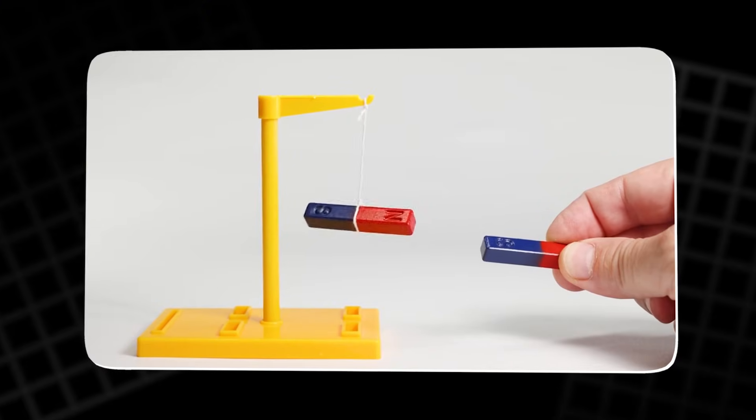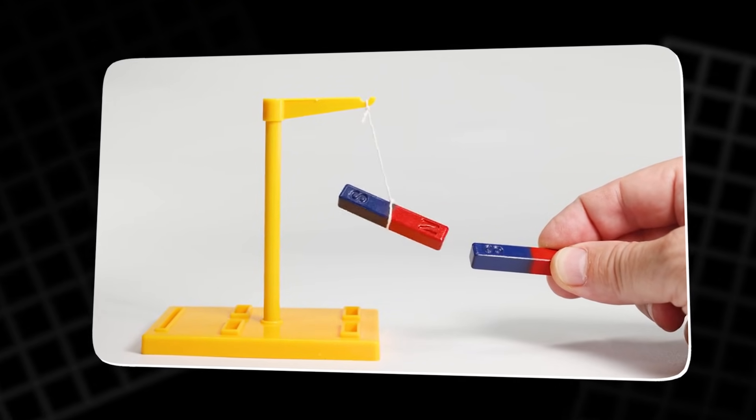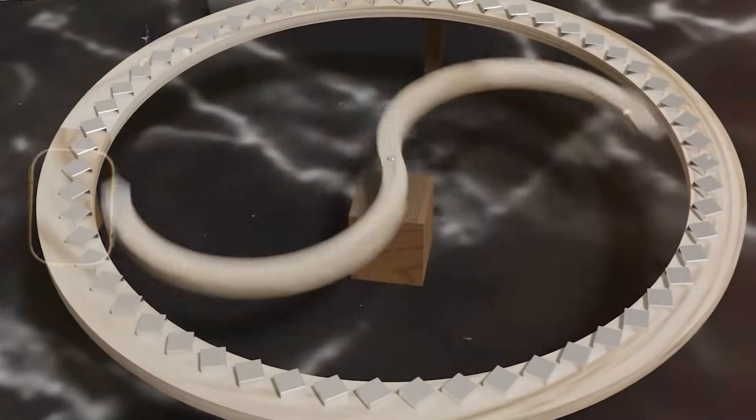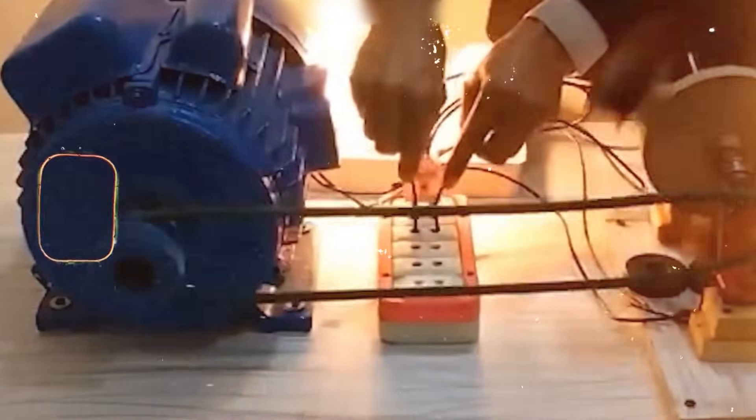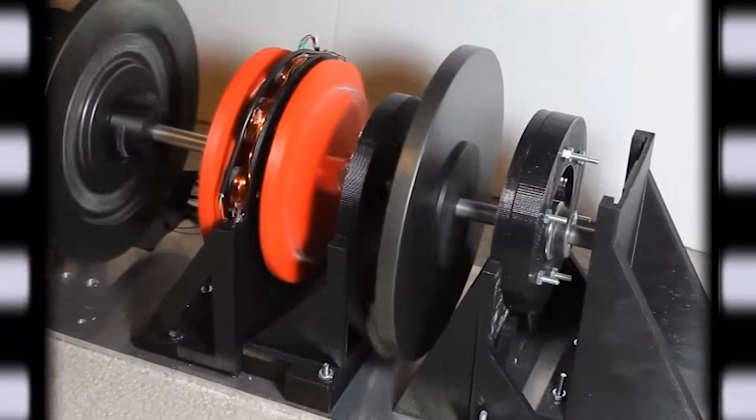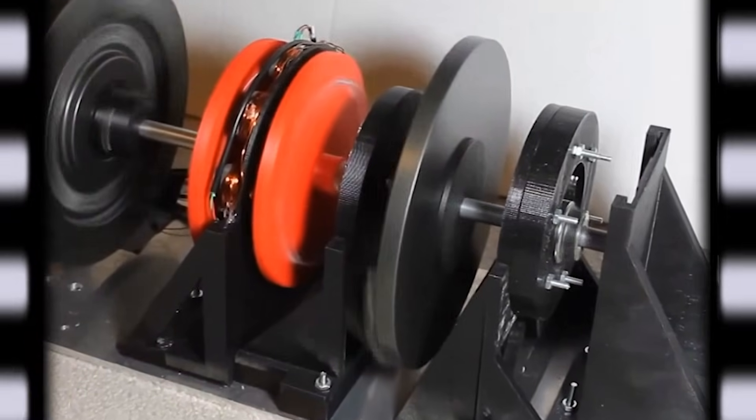When a metal roller enters this V, it speeds up. You can test this at home. The roller accelerates without a motor, and it looks like free energy. That single moment makes many people believe the effect can be repeated forever. And once someone sees this with their own eyes, their mind starts to imagine more.